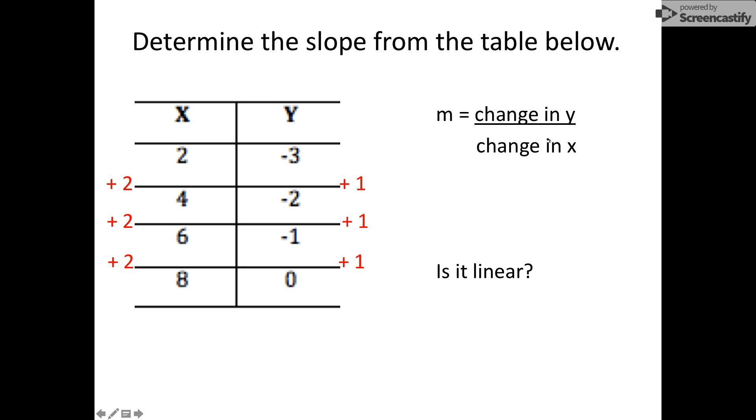So our change in y's is a positive 1, and our change in our x's is a positive 2, so therefore our slope is 1 half. The question: is it linear?